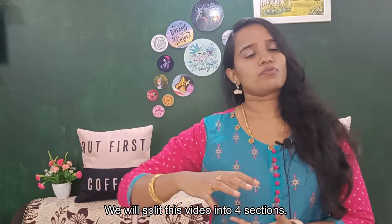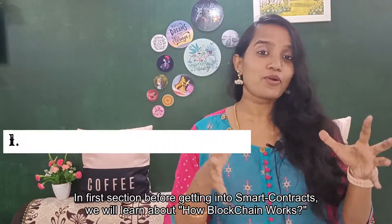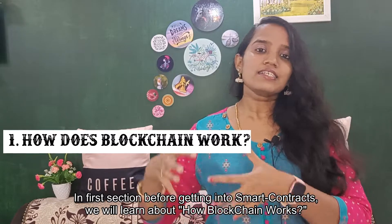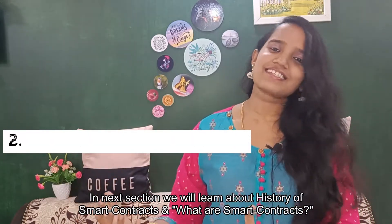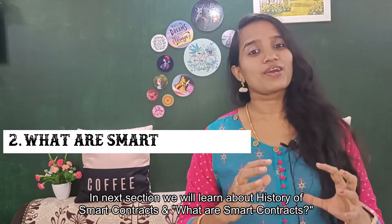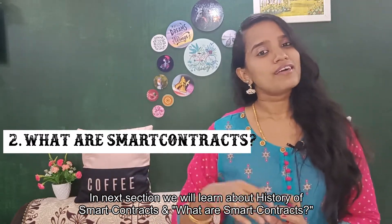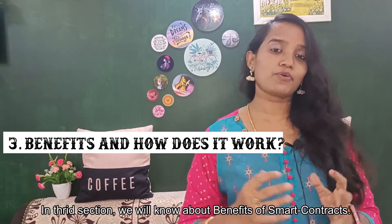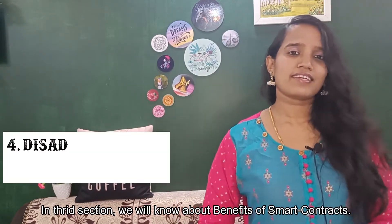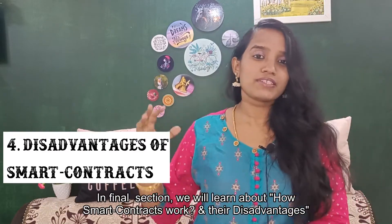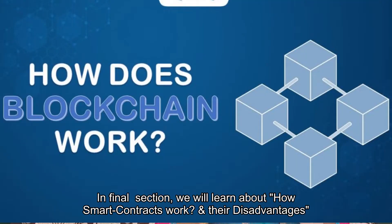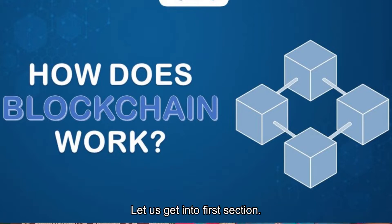First, how smart contracts work on blockchain. Next, smart contracts history. Third section, we can check that out. And the final section covers how it works on the other side, plus disadvantages. So, first section: how to work on blockchain.